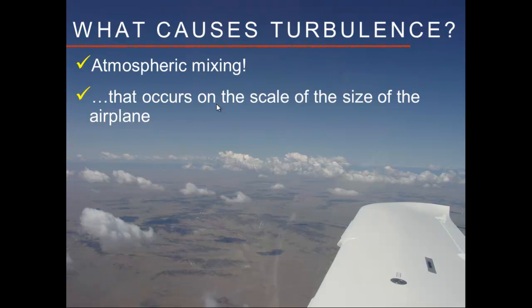Taking that same analogy further: drive your car fast over a large supermarket speed bump and you feel it because it's closer to the size of your car. But run a tiny remote control car over that same speed bump and it won't feel the bump — it'll just rise and fall over it, feeling the upwash and downwash. Again, it's not quite the size of the scale of that vehicle.